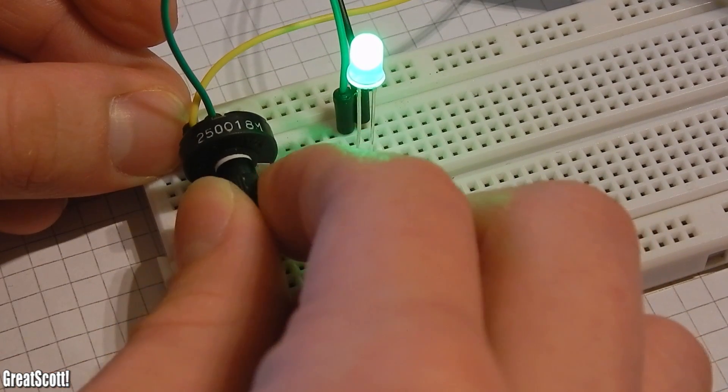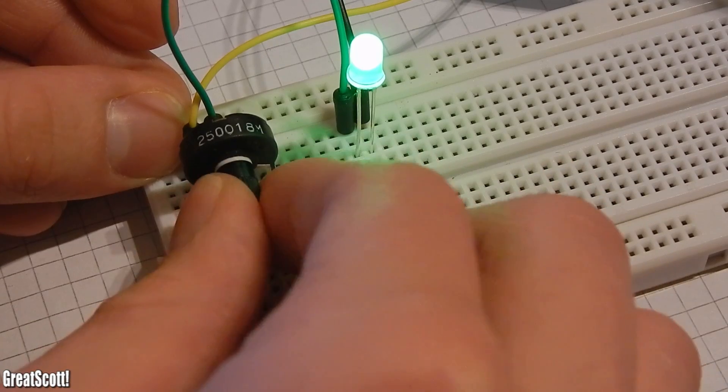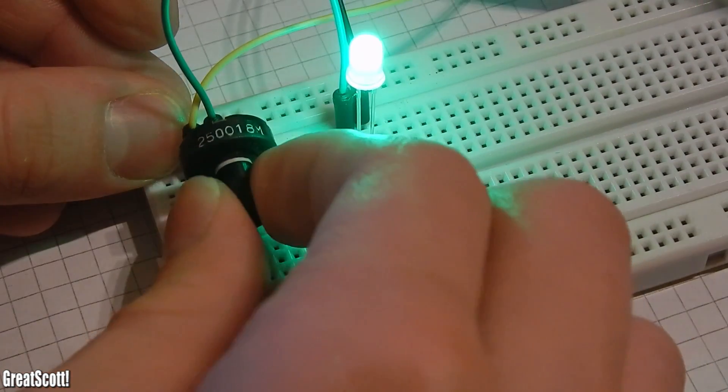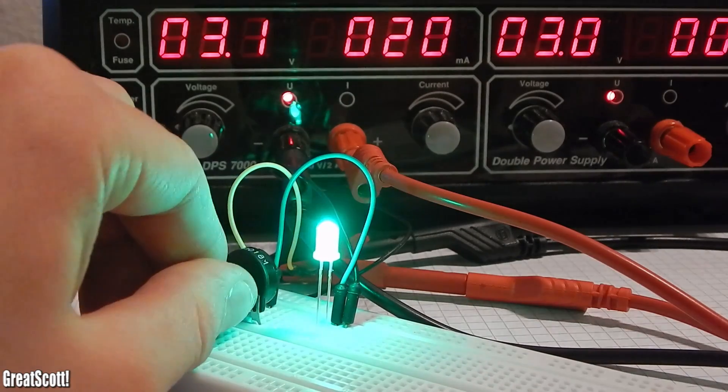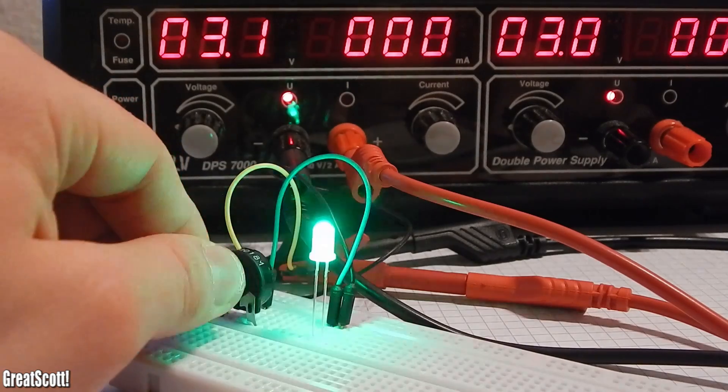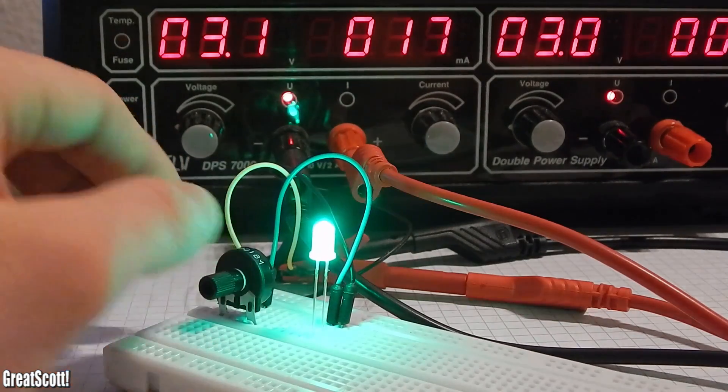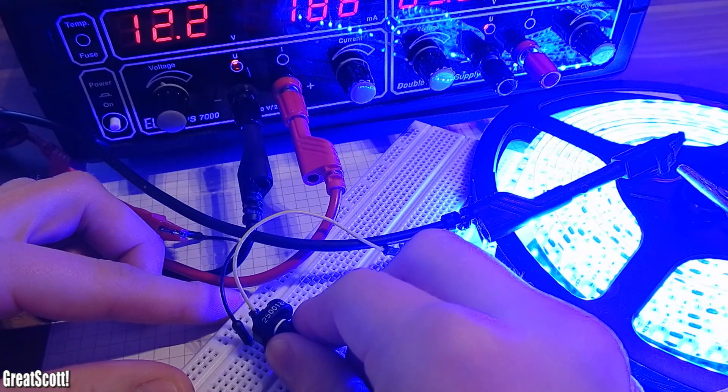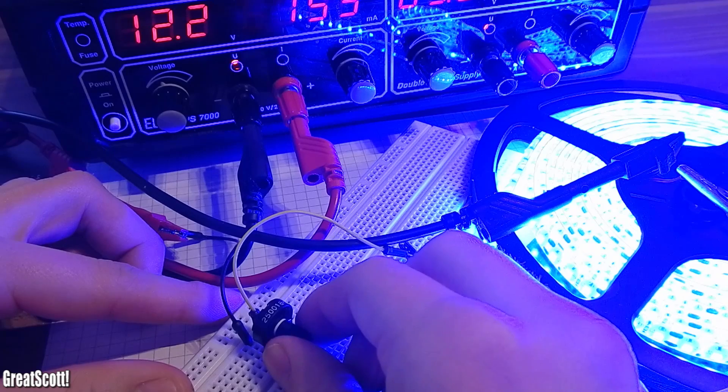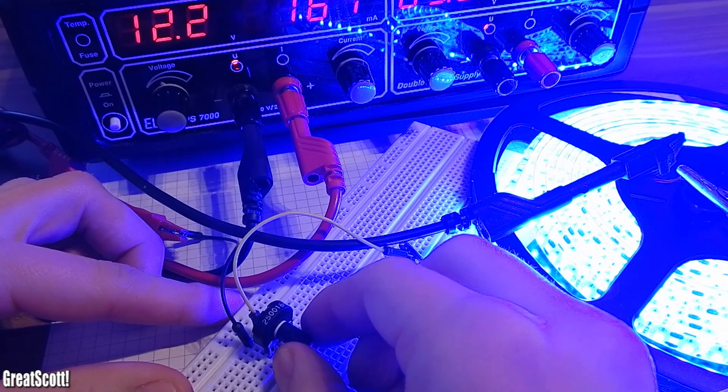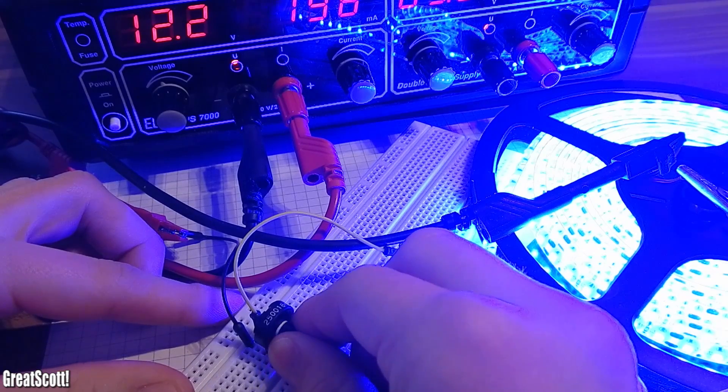You want to use a fixed voltage like, let's say, 5 volts or 12 volts. Some people might say just use a potentiometer in series to the LED, which is sometimes the easiest and fastest solution. But when you want to dim a high-power LED, there is a problem. Firstly, you waste energy because the potentiometer heats up because it's just a variable resistor in the end.